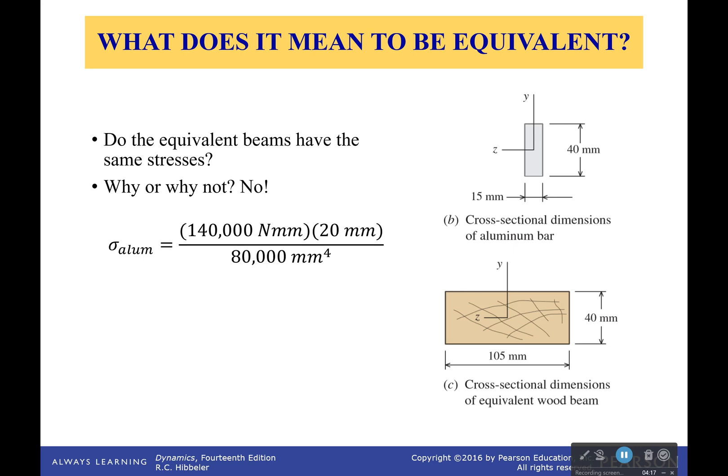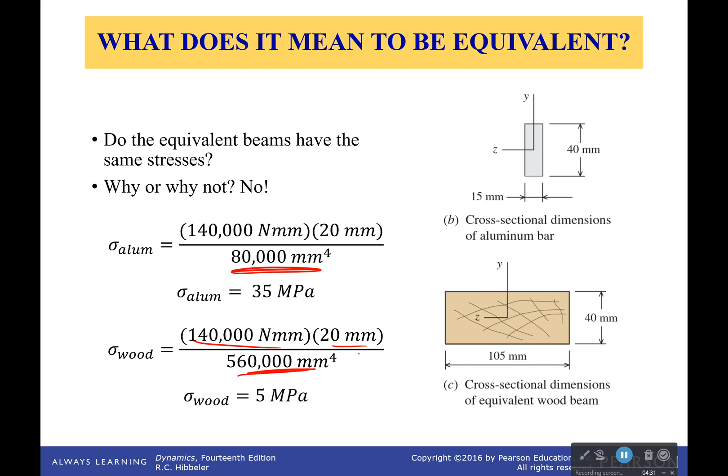So the stress for the aluminum, notice down here, it's moment of inertia, 35 megapascals. For wood, different moment of inertia but everything else is the same. And it has a much lower stress. Much lower stress because it has a much higher moment of inertia.